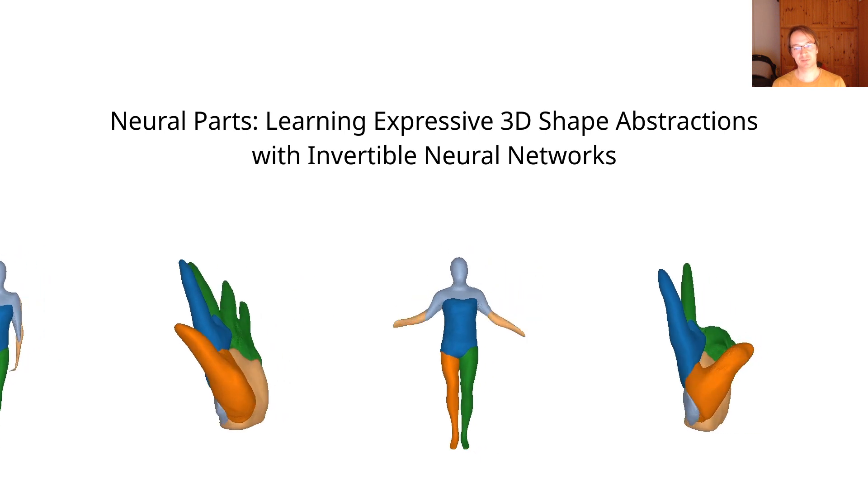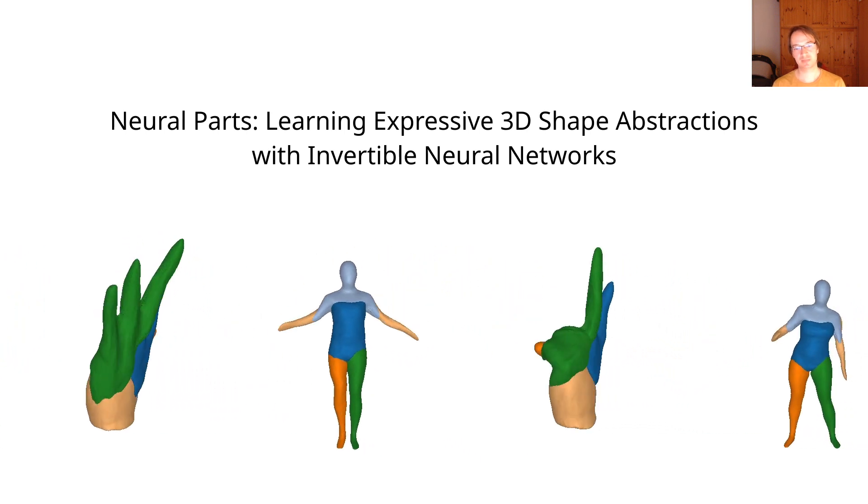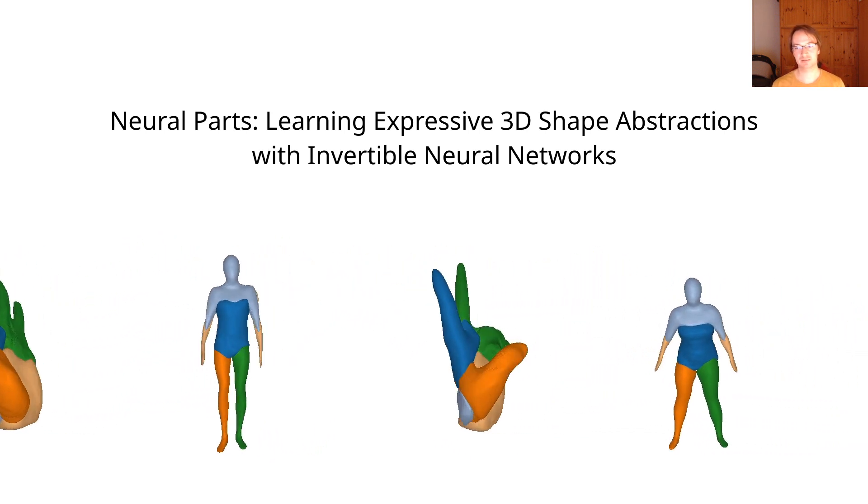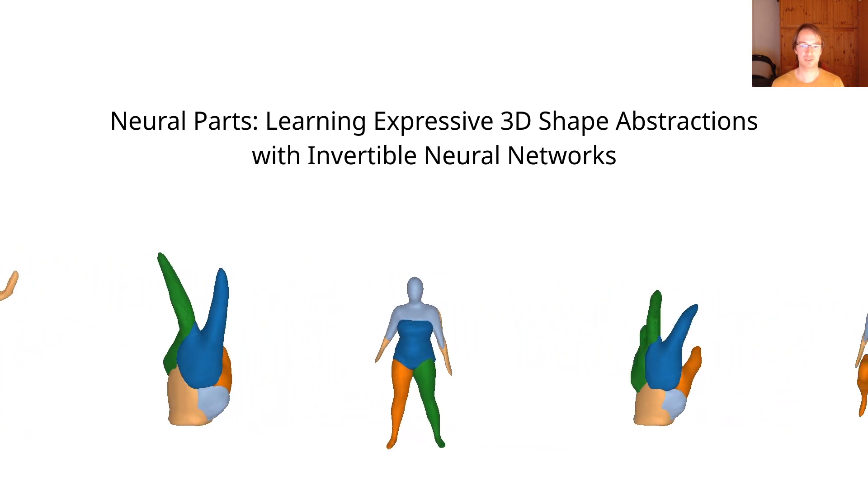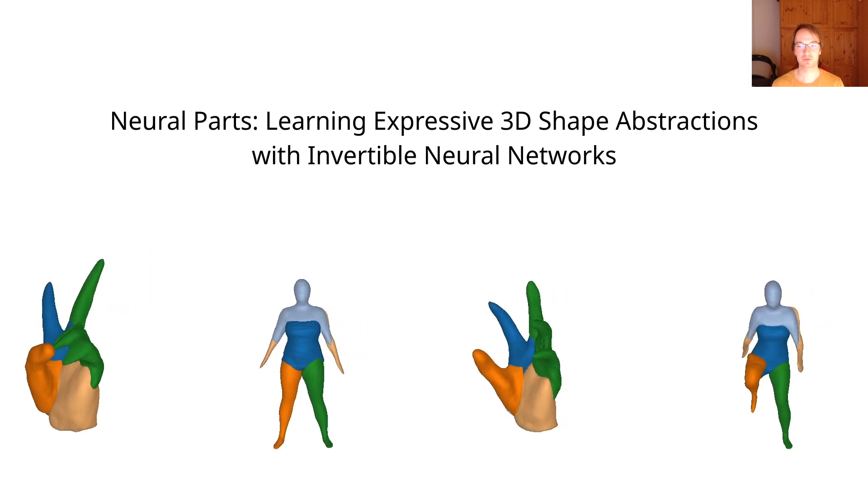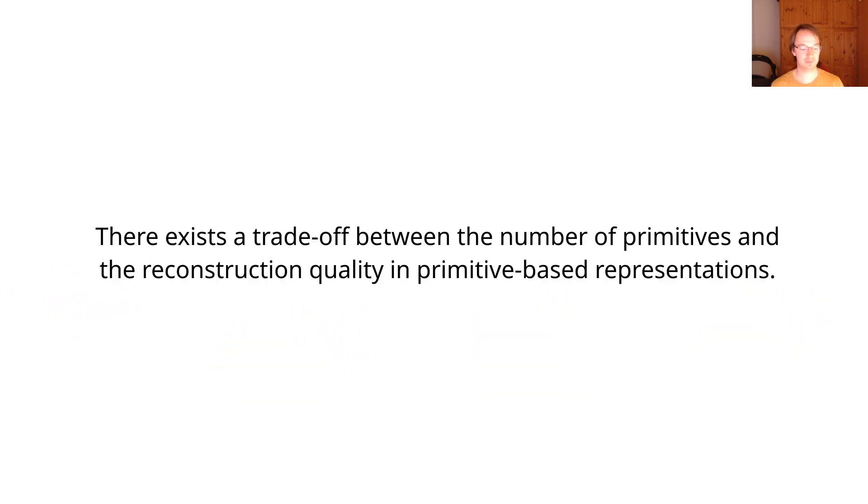So here are some examples. We have tried this on hands and human bodies and all kinds of ShapeNet objects as well. These are shape parses where, without ground truth for the parts, we have recovered these parts.